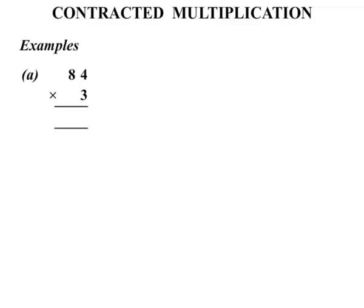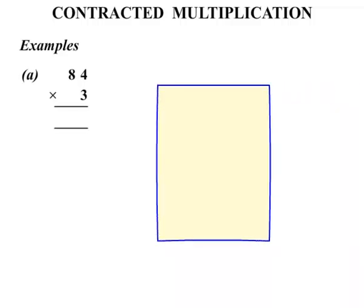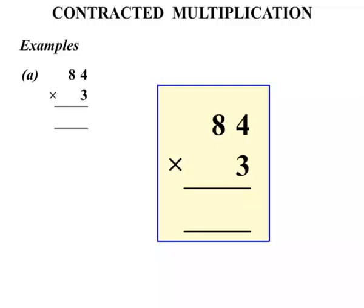Part A we have 84 times 3. Let's bring some working out space and write it down a little bit bigger. Okay there's the times sign.